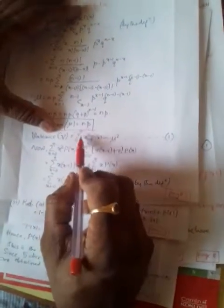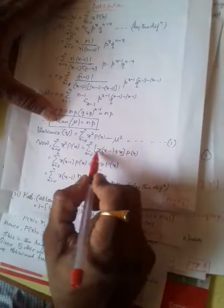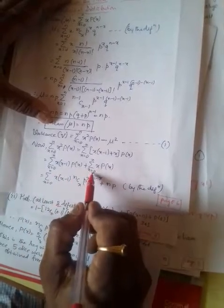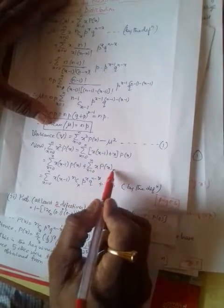Next, variance. Variance is given by the summation from 0 to N of X^2 * P(X) minus mu^2. Consider X^2 * P(X). We write X^2 = X*(X-1) + X, so this splits into the summation of X*(X-1)*P(X) plus the summation of X*P(X), from 0 to N. Substituting P(X) = NCX * P^X * Q^(N-X), the second summation equals NP, which we already proved.